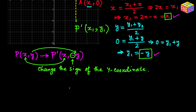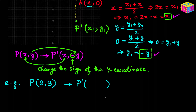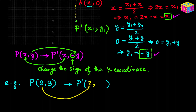Example 1: Suppose we have been given a point with coordinates (2, 3) and asked to find the coordinates of its image when reflected on the x-axis. The image P prime will have the same x coordinate, so we write 2, and the y coordinate takes the opposite sign, so it becomes −3. The image is (2, −3).